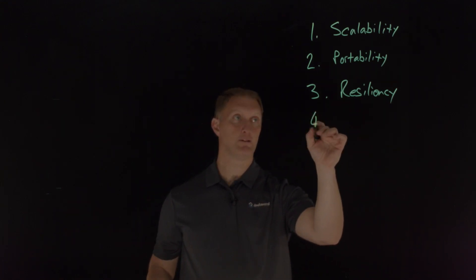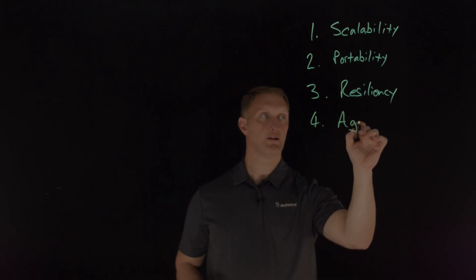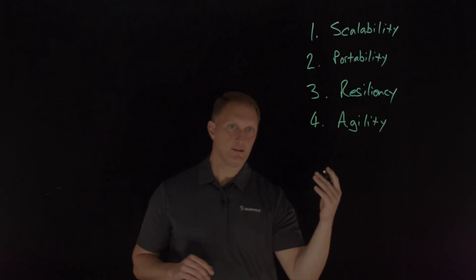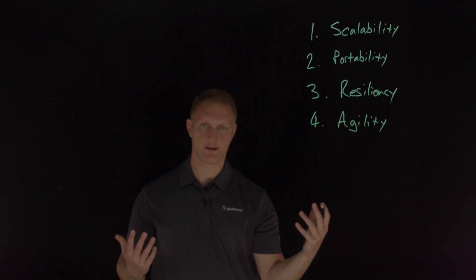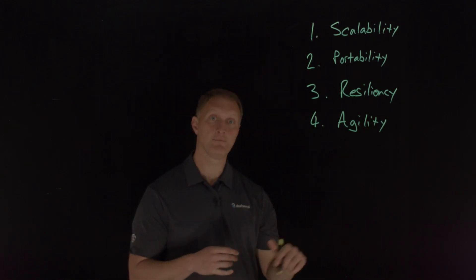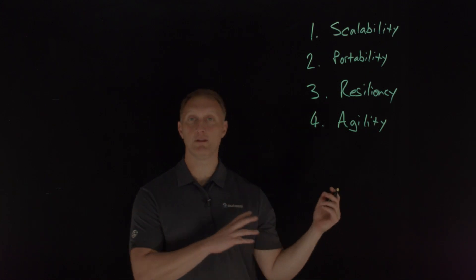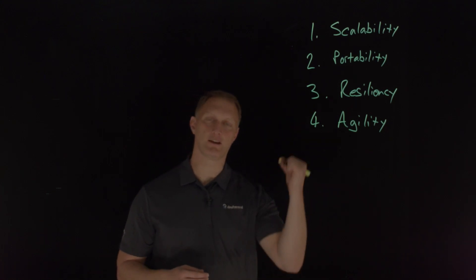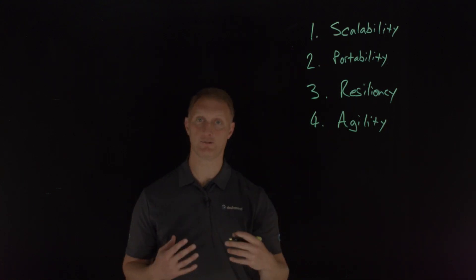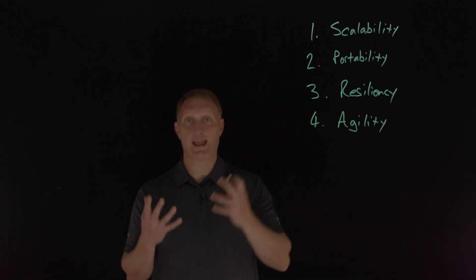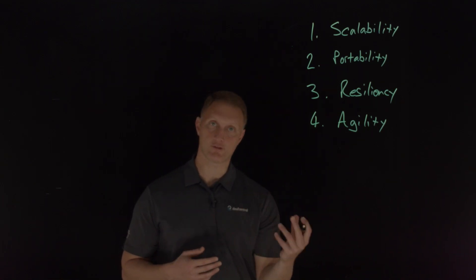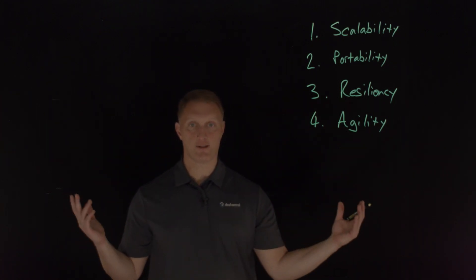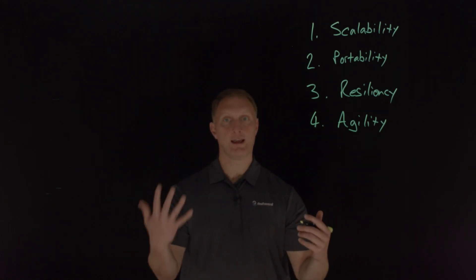The last pillar, number four, is agility — the ability to move quickly and decisively without a lot of effort. There are two types of agility. Code agility is the ability to ship code as frequently as desired — development teams want to ship code whenever they want. Infrastructure agility is the ability to spin up or spin down infrastructure to satisfy the needs of all your customers. So you need both code agility and infrastructure agility.